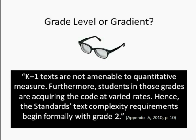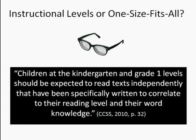This definitely suggests that we are not to be using a one-size-fits-all approach. A related mistaken idea is that students would be required to do whole-group reading of the same at-grade-level text material rather than matching text to readers. But a closer look, this time at a footnote within the Common Core document itself, suggests otherwise. Because children progress at different rates, the Common Core says children at the kindergarten and grade one levels should be expected to read texts independently that have been specifically written to correlate to their reading level and their word knowledge. This practice is well understood and employed by Reading Recovery teachers as an essential element of successfully developing competence in reading.